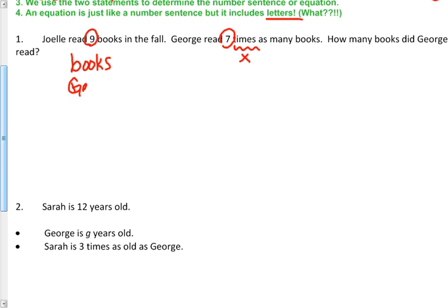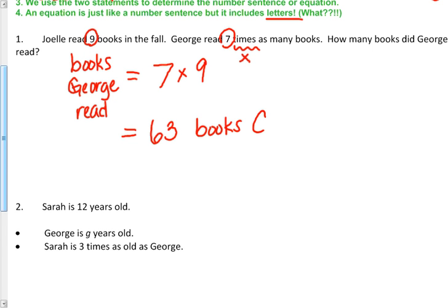So my question is how many books did George read? So books George read, that's what we need to find out. So we find that out by creating our number sentence. So it says George read seven times, so I'm going to write seven times as many books, and that's referring or comparing it to Joel who read nine books. So that's telling me seven times nine is 63 books George read.